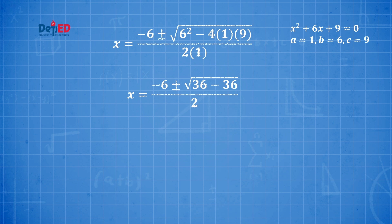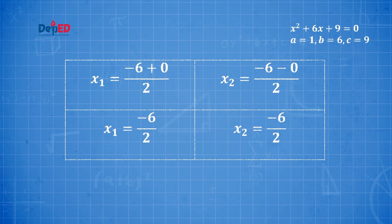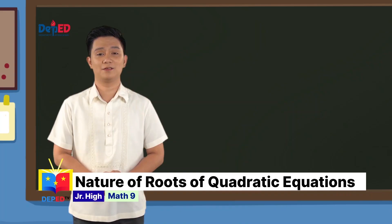Since 36 − 36 = 0, zero now appears under the radical sign. The numerator is expressed as −6 ± 0 because √0 = 0. Breaking down the equation: x₁ = (−6 + 0) / 2 and x₂ = (−6 − 0) / 2. Both values simplify as −6/2. Increasing or decreasing a number by 0 yields the same number. Dividing −6 by 2, x₁ and x₂ are both equal to −3. The two roots are integers and they are also equal.